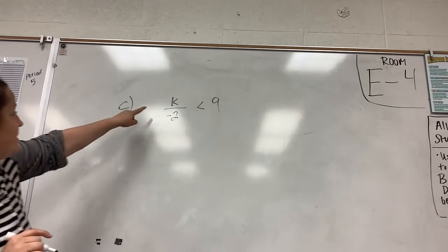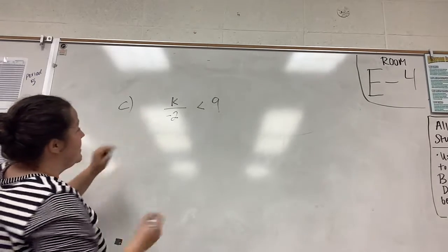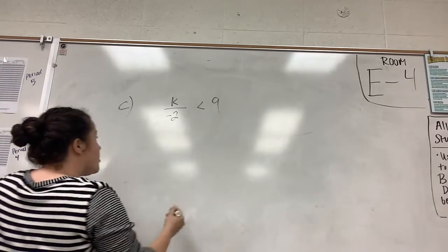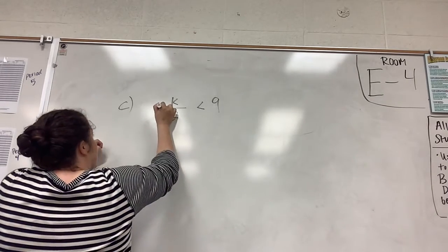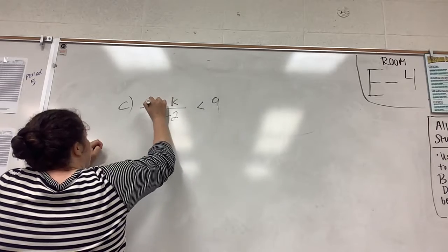In this problem, we have k divided by negative 2 is less than 9. We want to get k by itself, so to get k by itself, we multiply both sides by negative 2.